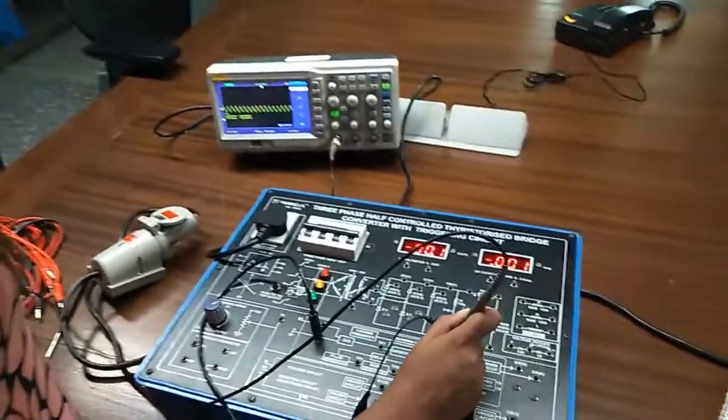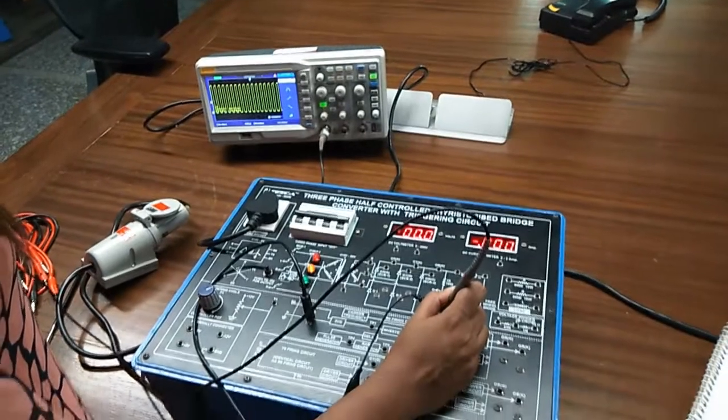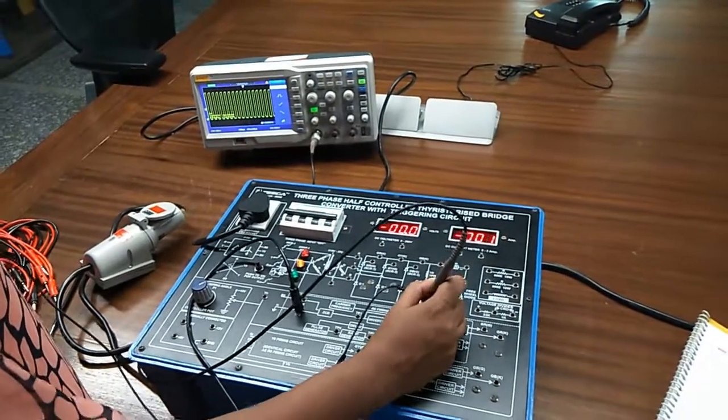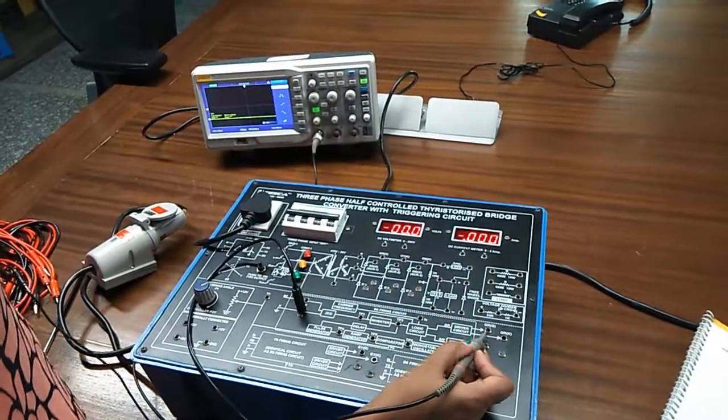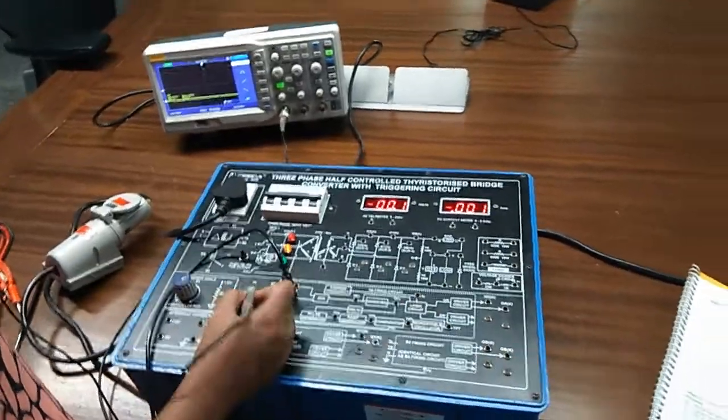This is the output waveform at test point fc. Like this you can also check the output waveform at GRG and vc.